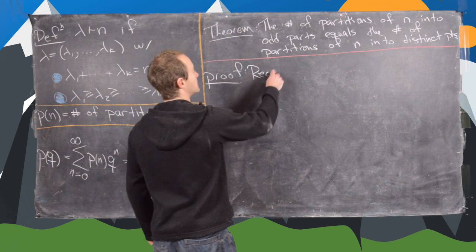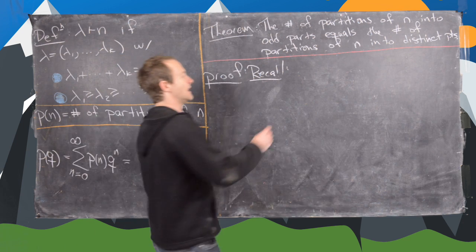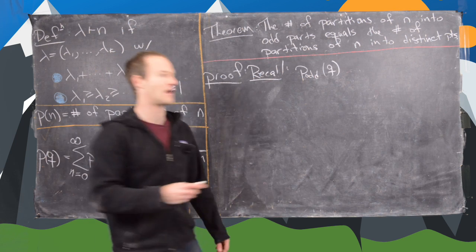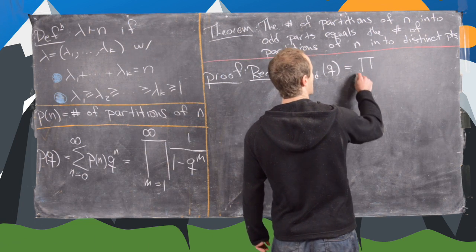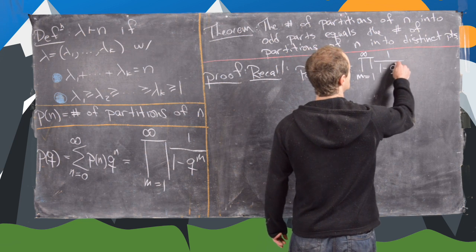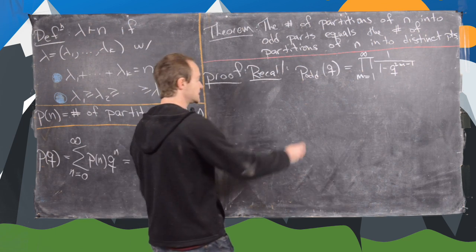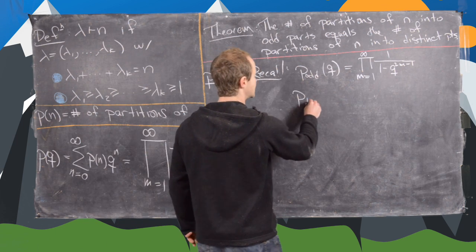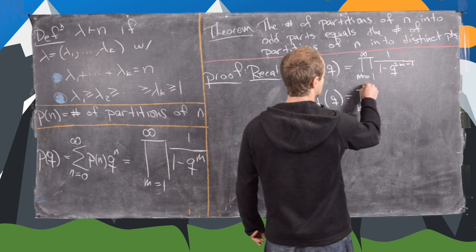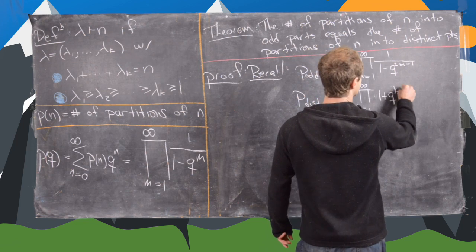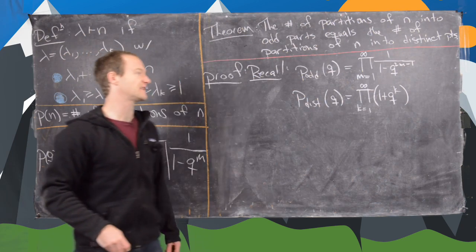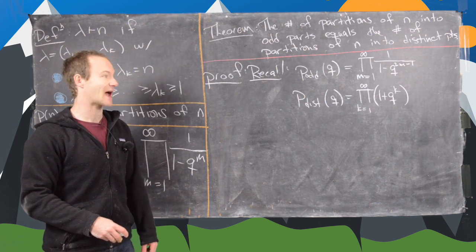In the first video of this series we saw numerical evidence that this would be true, and now we're going to prove it using generating functions. Recall from the last video that the generating function for partitions of n into odd parts is the infinite product from m equals 1 to infinity of 1 over (1 minus q^(2m-1)), and p_distinct of q equals the product from k equals 1 to infinity of (1 plus q^k). Proving the theorem is equivalent to proving these two generating functions are equal.